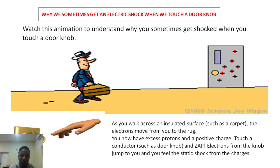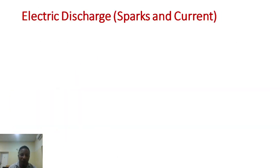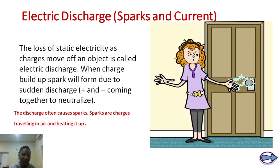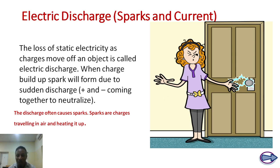A spark is due to sudden discharge — when electrons flow to meet the proton, or when negative charge flows to meet positive charge. Whenever electrons flow in air, there seem to be sparks or a heating effect on the air, and that is the shock we feel. The loss of static electricity as charge moves off an object is called electric discharge. When charge builds up, a spark forms due to sudden discharge — positive and negative coming together to neutralize.